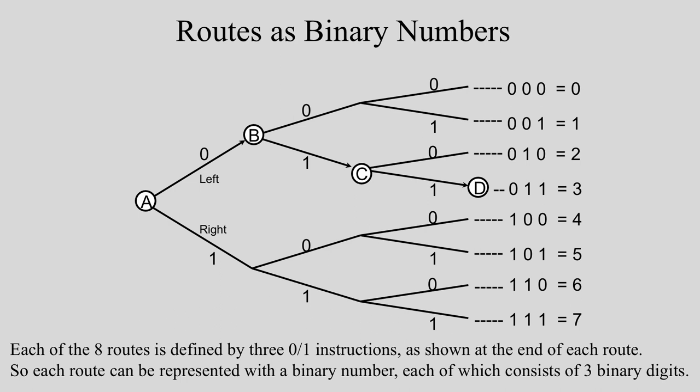For example, to get from A to D, you need to turn left, then right, and right again, which corresponds to a 0, a 1, and another 1. And this sequence of 3 instructions is summarized by the binary number 011.